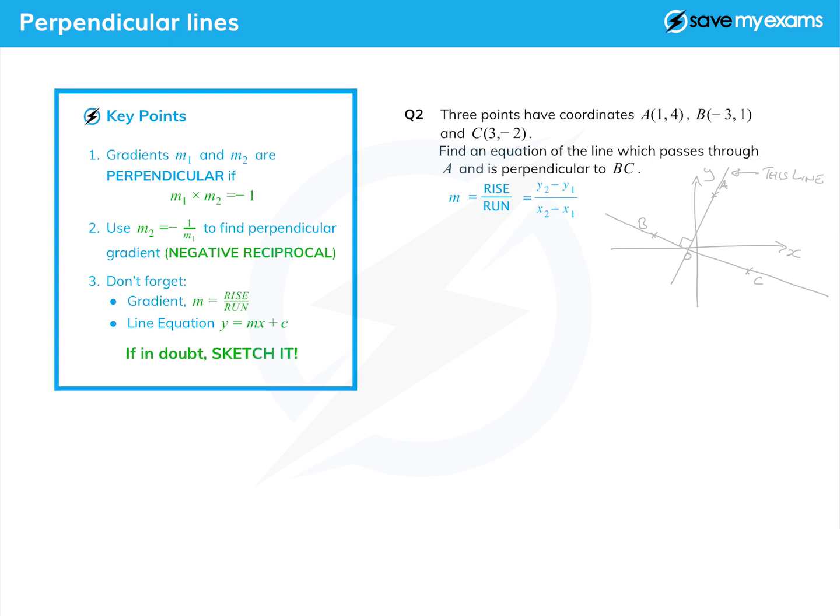Again we need to find a gradient and a point on the line. Well we have a point on the line so that's fine. So we just need to find the gradient, and to do that we're first of all going to find the gradient of BC using our gradient formula here: rise over run, or the difference in the y's over the difference in the x's.